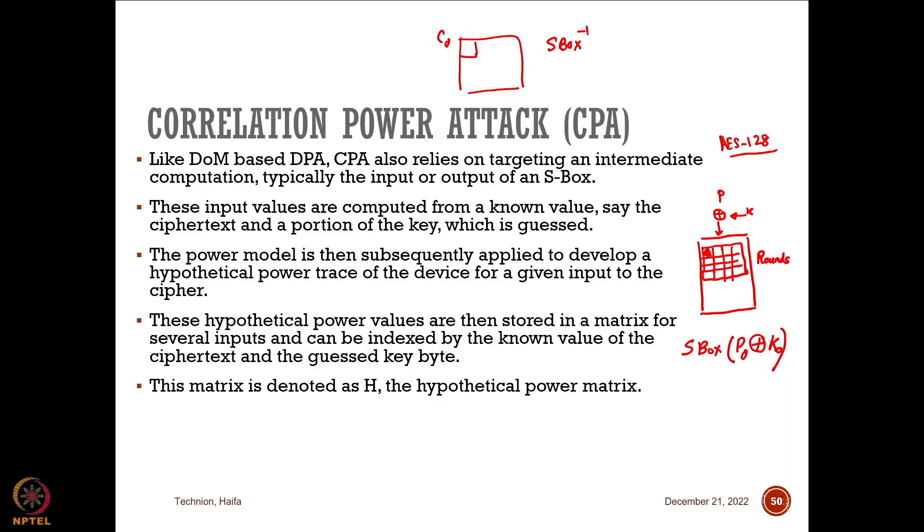When working from the ciphertext, K0 will be the 10th round key. From the key scheduling algorithm, the input key produces round keys through all 10 rounds. If you can deduce the 10th round key, you can apply the inverse key scheduling to obtain the main key. As an attacker, if you have more access to the ciphertext and the corresponding power trace, you can use that information to recover the key.